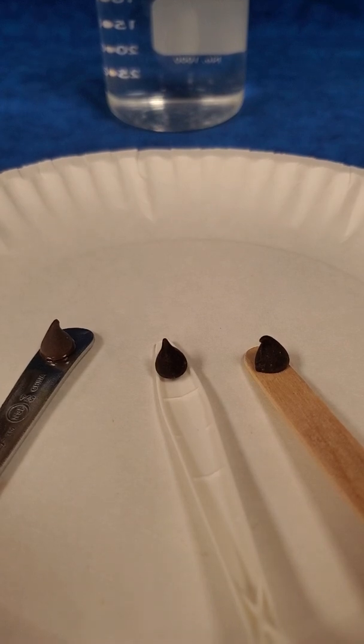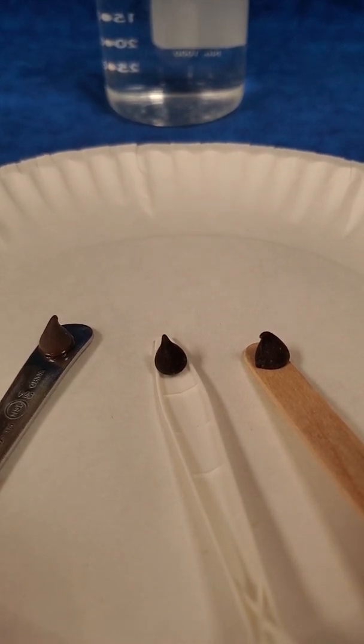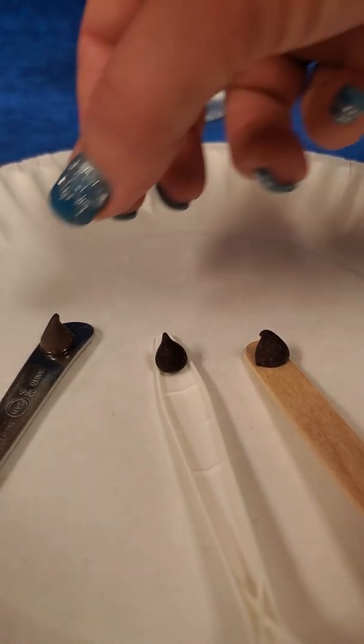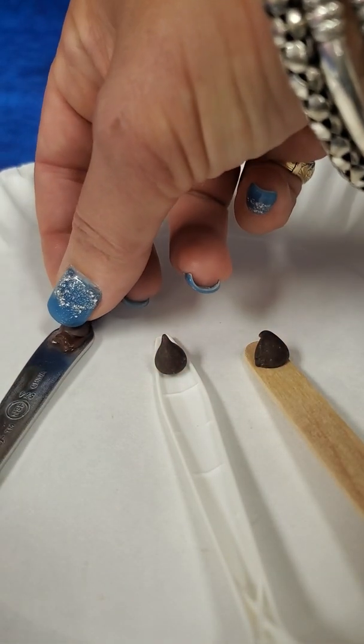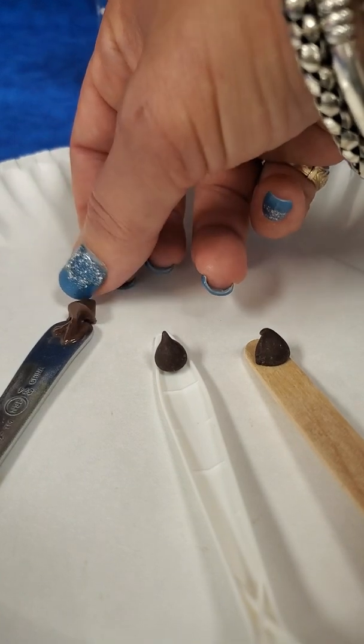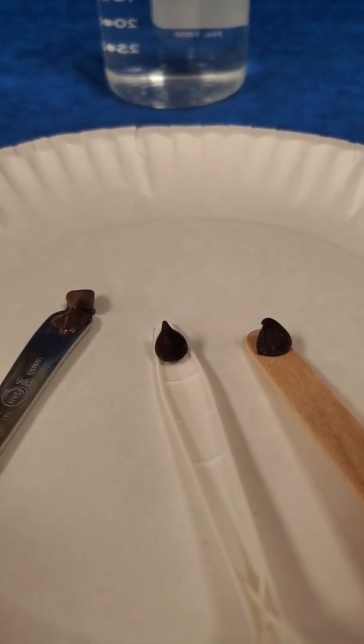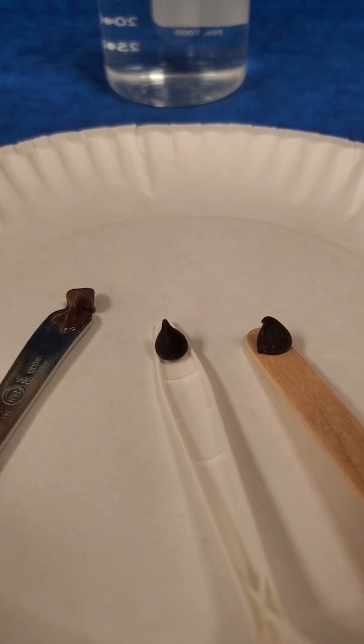I notice that the bottom of the chip on the metal spoon looks shiny. Let's see what's going on there. Well, the thermal energy was able to travel through the metal spoon and reach the chocolate chip. That's because metal is an excellent conductor of thermal energy.